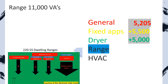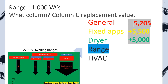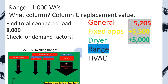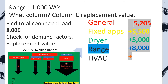Now our range. The first thing we're going to ask is what column does our individual range fall in? This one falls into column C, and column C is a replacement value. Let's find our total connected load — we start on the left-hand side of the table, find our number of ranges, then cross over to column C, and it's 8,000. Now we check for demand factors: there are no demand factors on column C because it is a replacement value, and we write down 8,000.